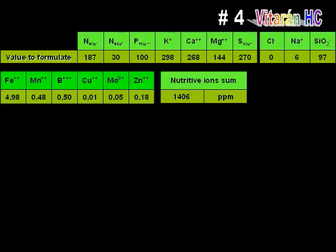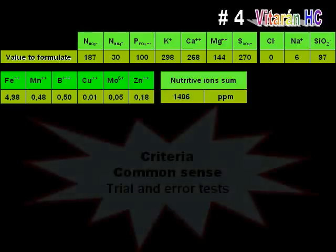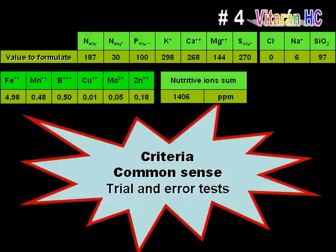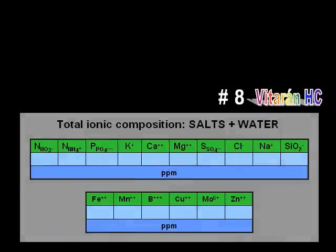Established criteria, a drop of common sense, and possibly some experimentation might be needed in order to arrive at the optimum nutrient formula. As a consequence, the final formulation will have some elemental ion differences from the original ionic starting point. Our target is located at the small table on the bottom of sheet number eight. The ionic results shown in it are an example resulting from fine-tuning experiments guided by a bit of common sense.